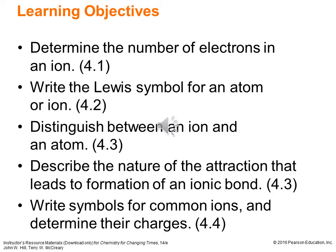As usual, we have a number of learning objectives for this chapter. First, we'll determine the number of electrons in an ion. We'll be able to write the Lewis symbol for an atom or ion and distinguish between an ion and an atom — we already hinted at that previously, but now we'll make that a very clear distinction.